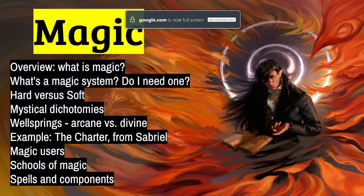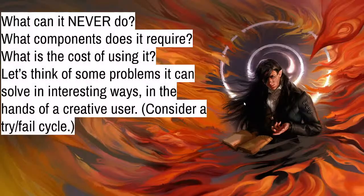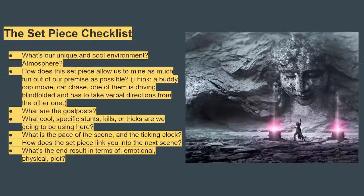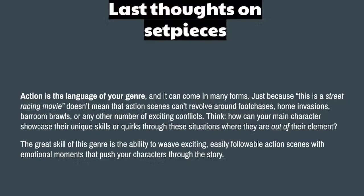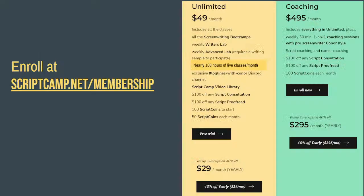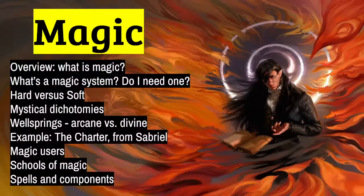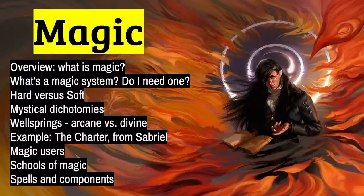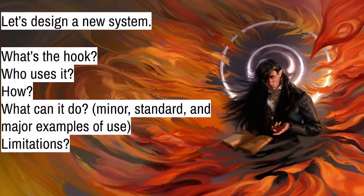I want to look at limitations, components, and cost — and some ways we can think of variations or different ways these might come up in a fight or action sequence specifically. After that, I want to get into set pieces, the 'A defeats B defeats C' structure, and then do a reading from the Margaret Rogerson book. We'll talk about that scene and how it uses the advantages of the prose medium to best effect.